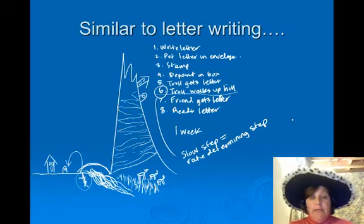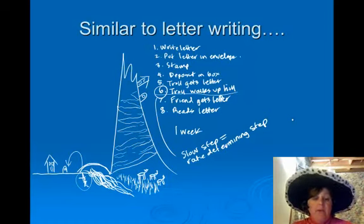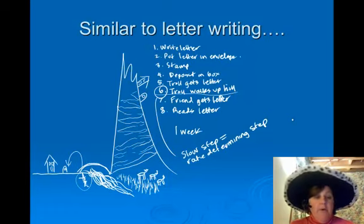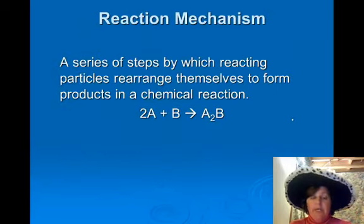But it still takes about a week. The problem, obviously, is the troll walking up the hill. Because the troll must be slowed down by this crazy walk that he has to do. So, the troll walking up the hill takes a lot of time. So, we would call this step, obviously, the slow step, or the rate-determining step. So, it determines the rate of the reaction. In other words, if the troll can't move any faster up that hill, that letter isn't going to be delivered any more quickly.